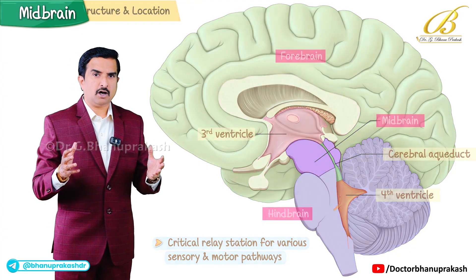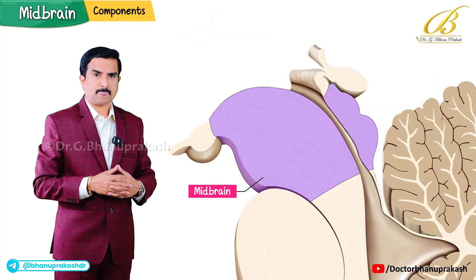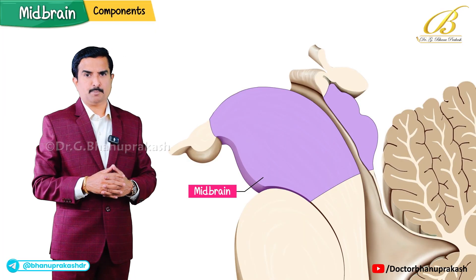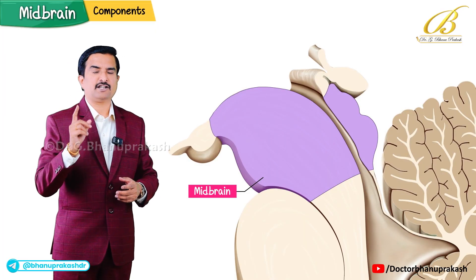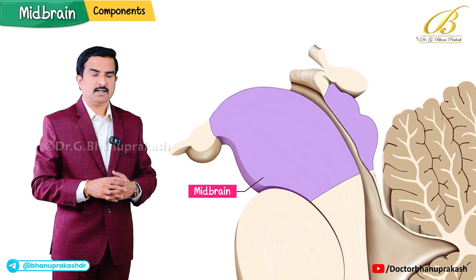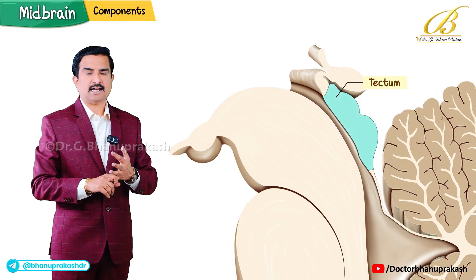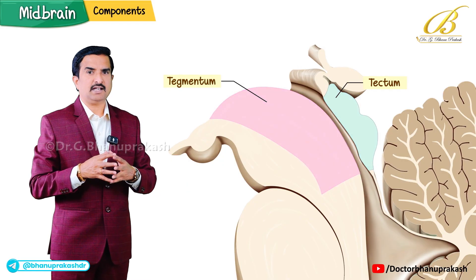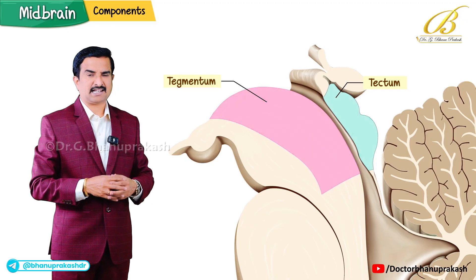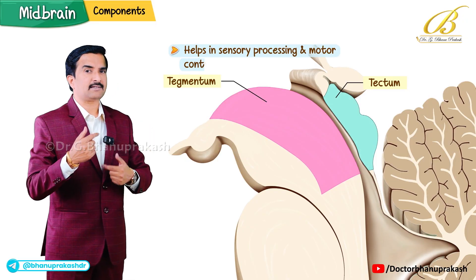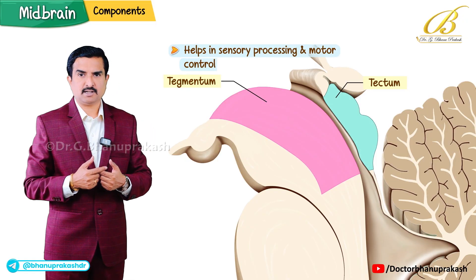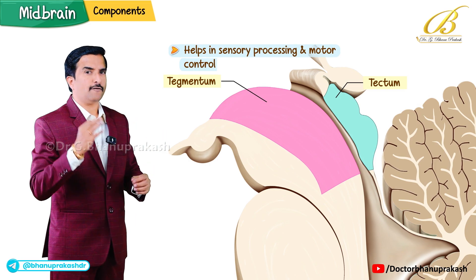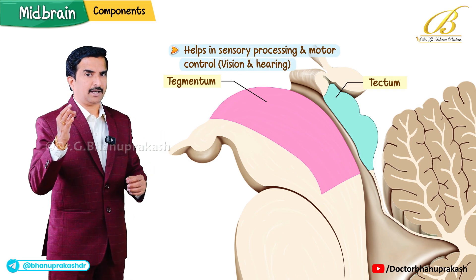The midbrain has two main components that are essential for its function: the first one is the tectum and the second one is the tegmentum. Each of these components has specific roles in sensory processing and motor control, particularly focusing on vision and hearing.